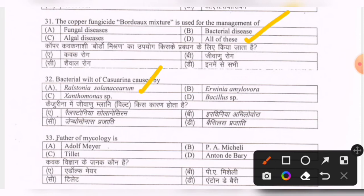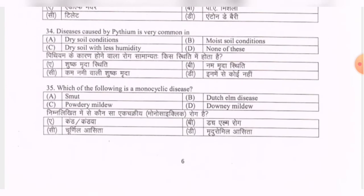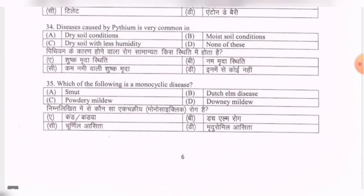Next question about bacterial wilt — the correct option is Ralstonia solanacearum. Next question: father of mycology — options are Adolf Mayer, P.A. Micheli, Tillet, Anthony de Bary. The correct option is B — P.A. Micheli.